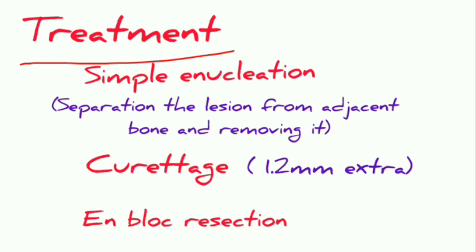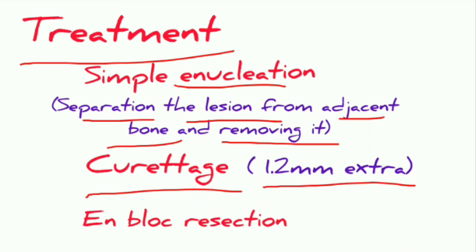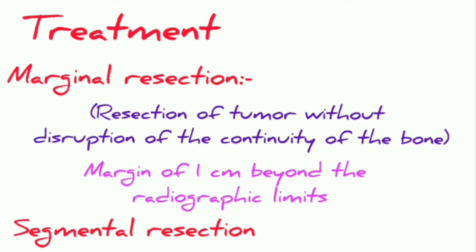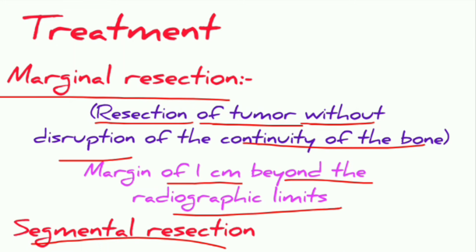Treatment options for multicystic ameloblastoma include: simple enucleation, where the lesion is separated from adjacent vital bone and removed; curettage, where the tumor mass is removed with a one to two mm extra margin; en bloc resection; and marginal resection, which is resection of the tumor without disrupting the continuity of the bone, with a one centimeter margin beyond the radiographic limit excised.